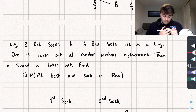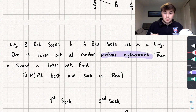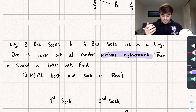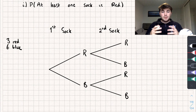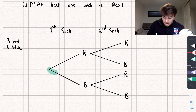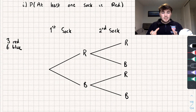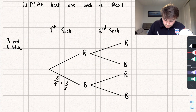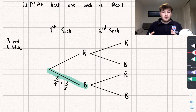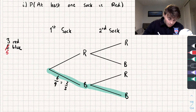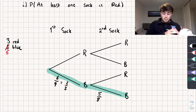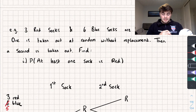Now let's look at a slightly different question. Three red socks and six blue socks are in a bag, one is taken out at random — but this time without replacement — and then a second sock is taken out. Without replacement changes things: for example, if a blue sock is taken first, the probability of blue on the second pick becomes five out of eight, because there are now only eight socks remaining.